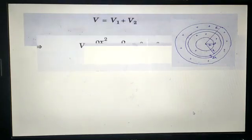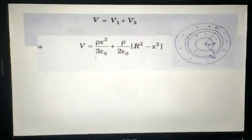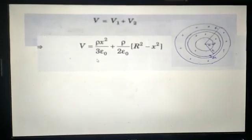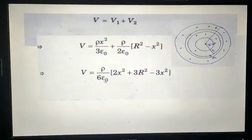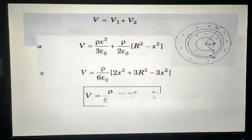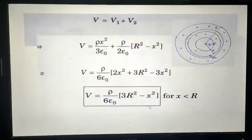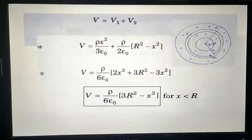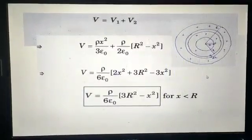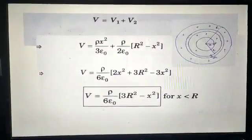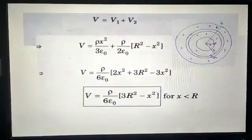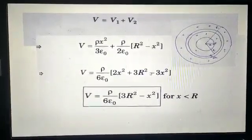Now we add V1 and V2. Writing out both values and taking common terms, we finally derive the complete relation for V — the electric potential at a point P inside the non-conducting solid sphere at distance X from the center. For any point outside the sphere or at the surface, it is given by the earlier expression we derived.